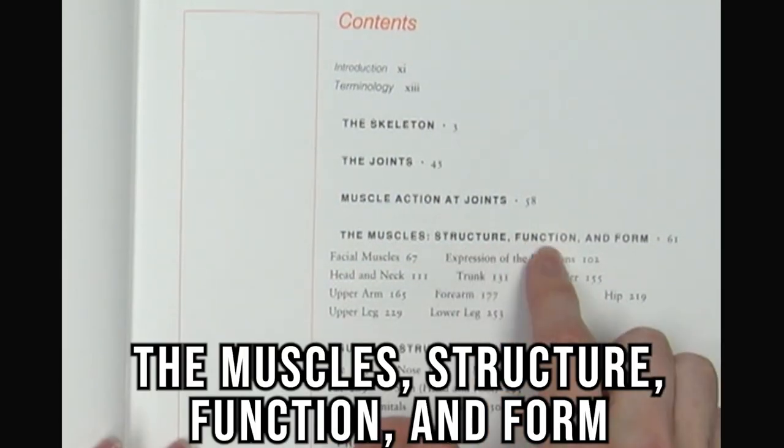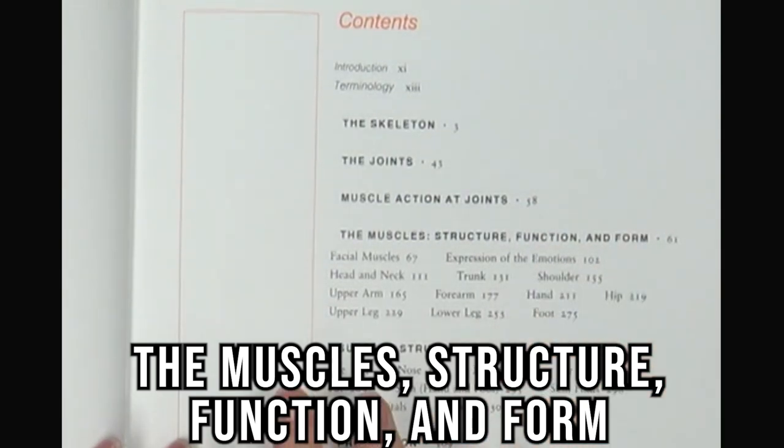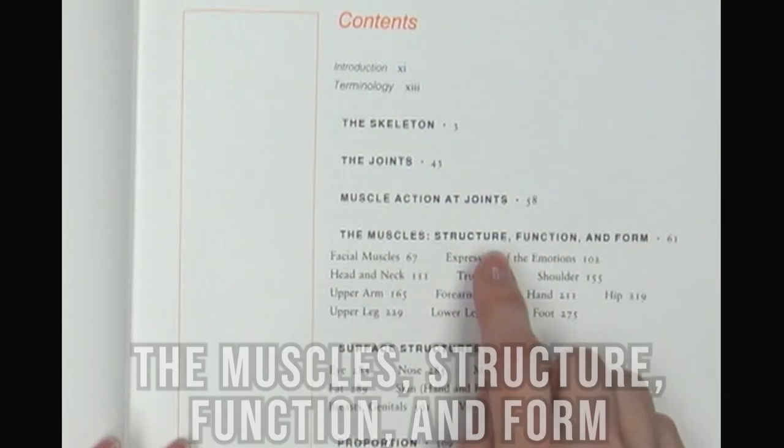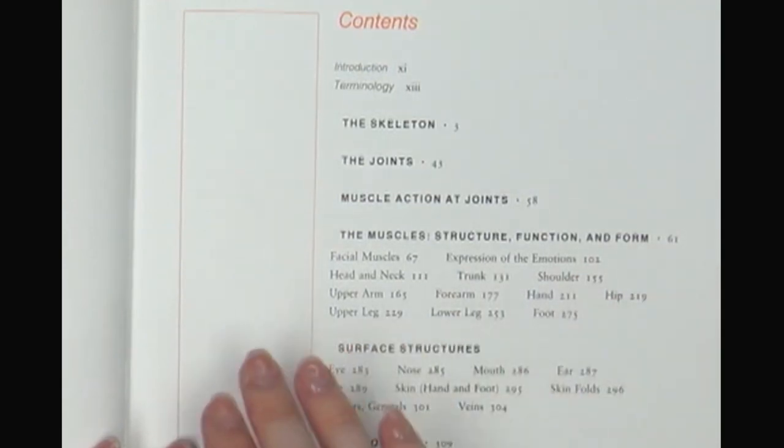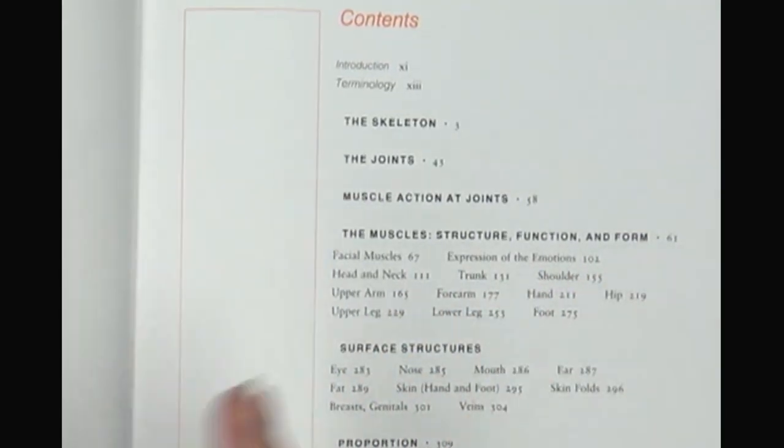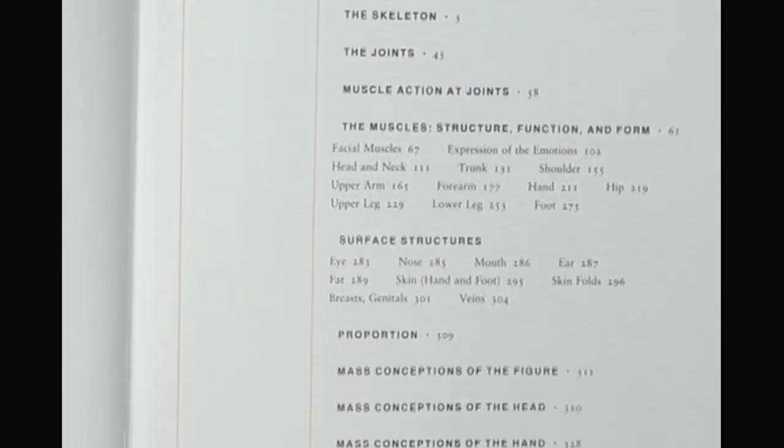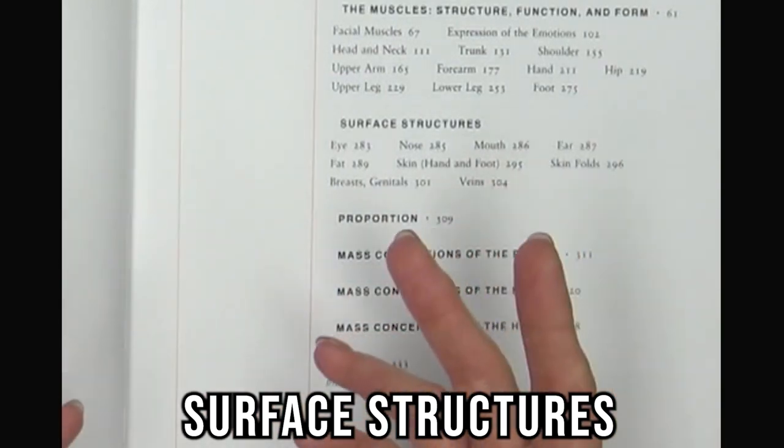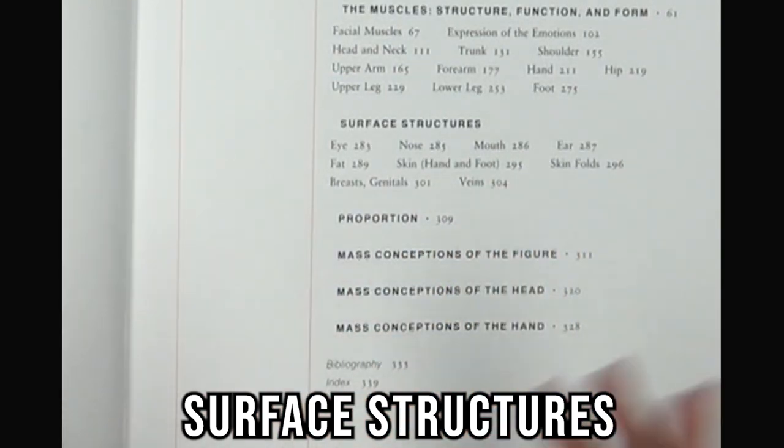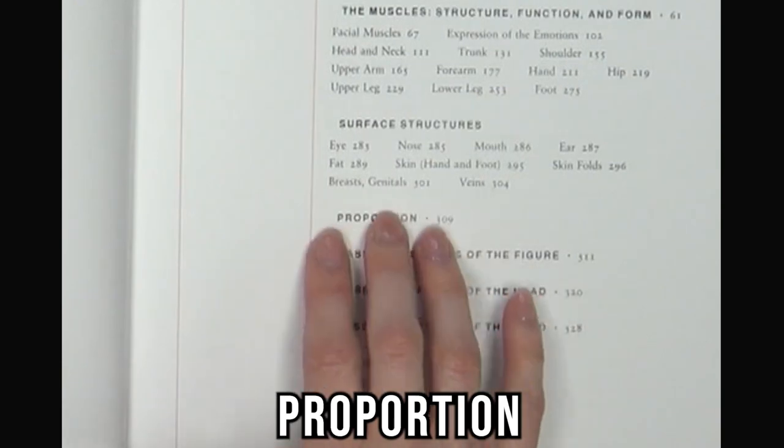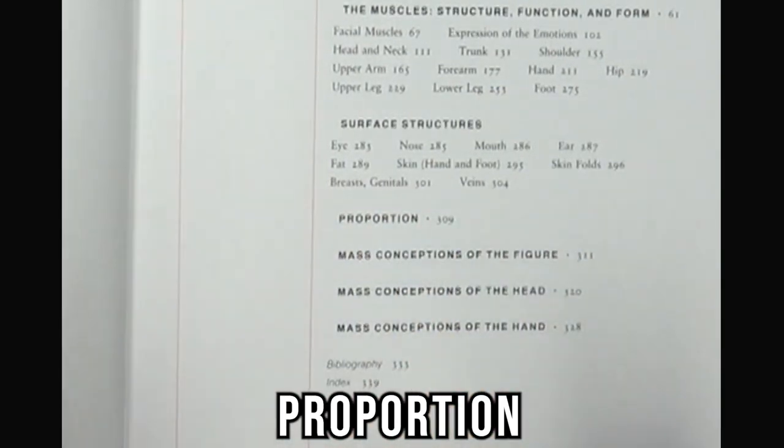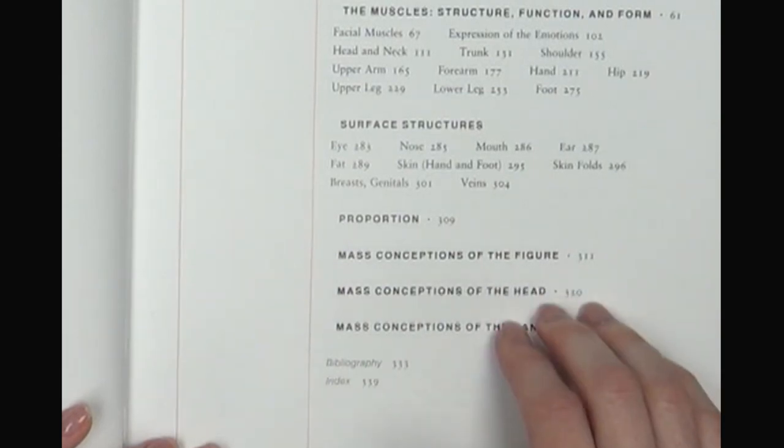I'm going to show you the table of contents so that you can get a feel for it before we get into it. So here's that table of contents, and what you're going to find is they start with the skeleton. So that's great. Get your foundation first. But then there are also two other sections after this before you really get into the muscle anatomy. So there's discussion of the joints and discussion of muscle actions at the joints.